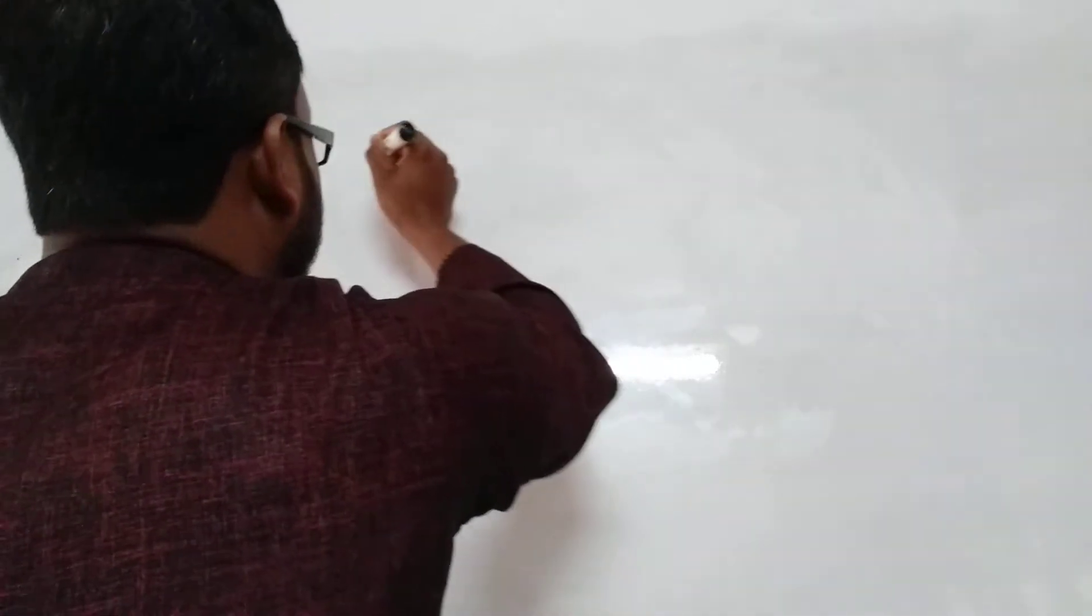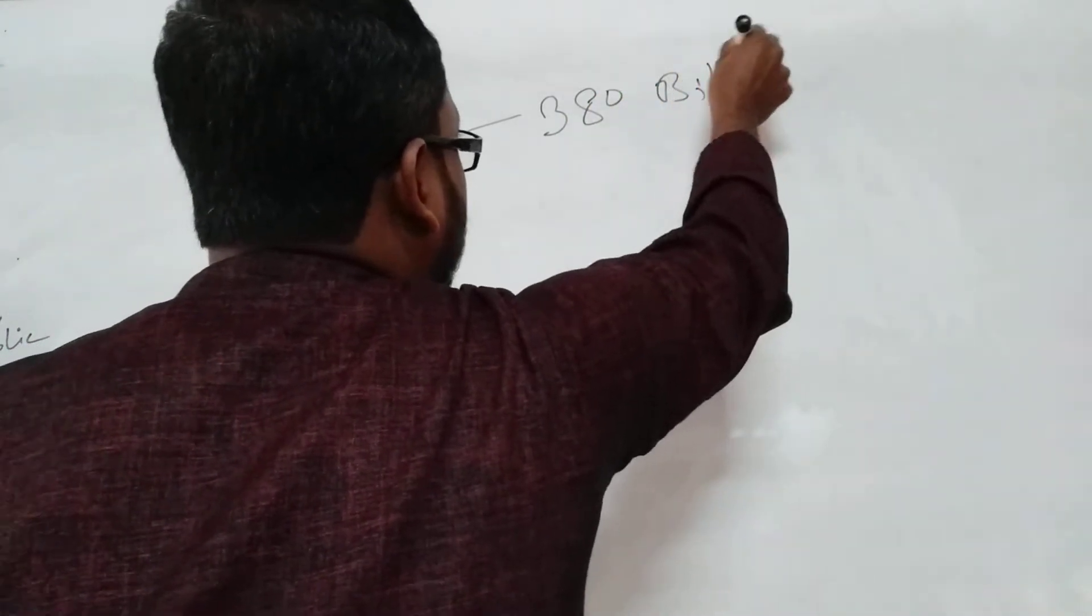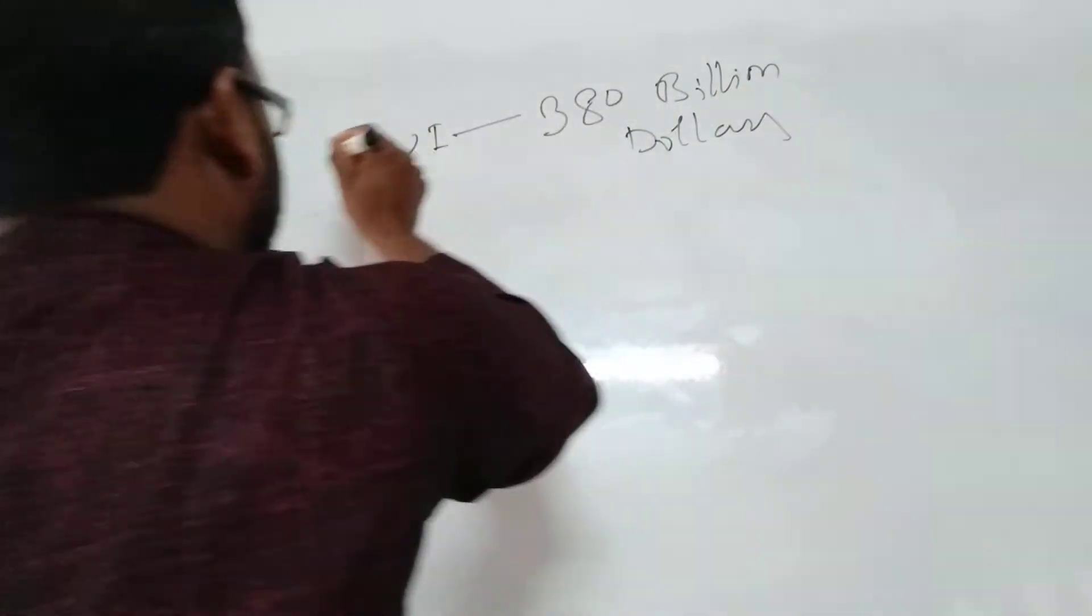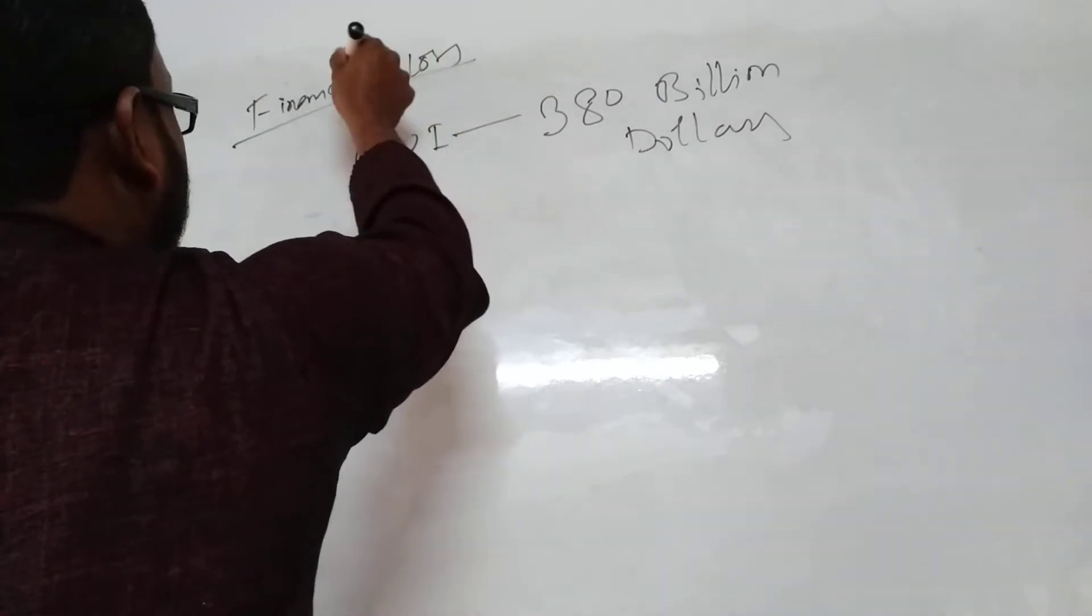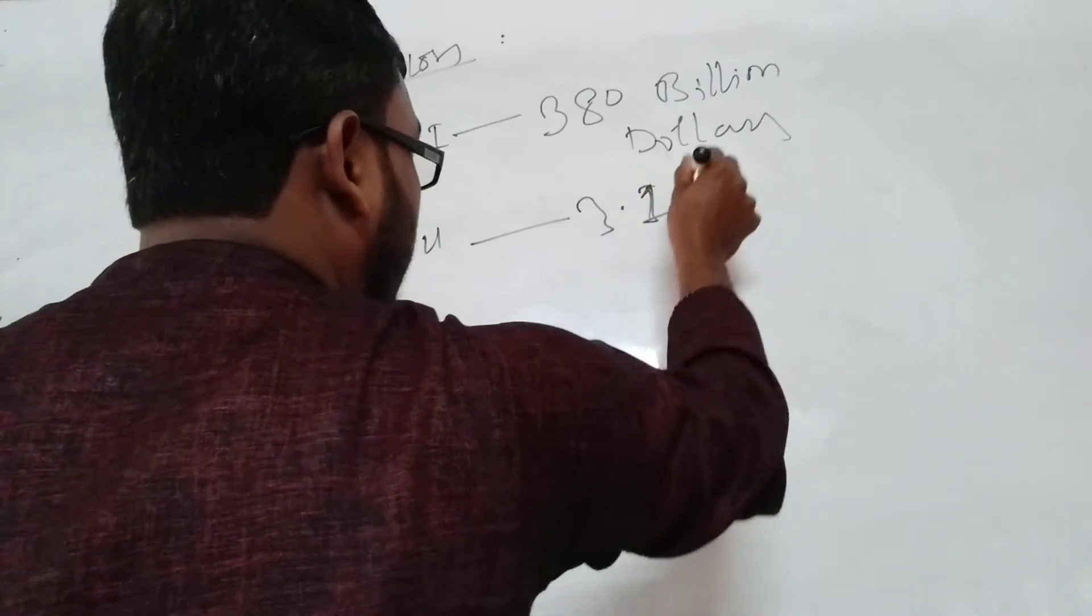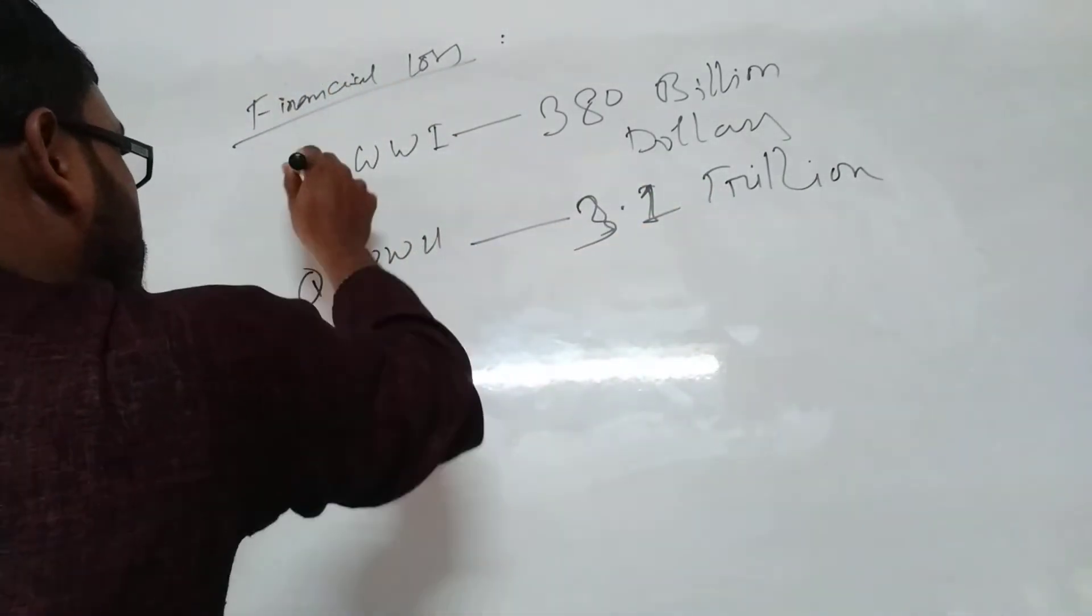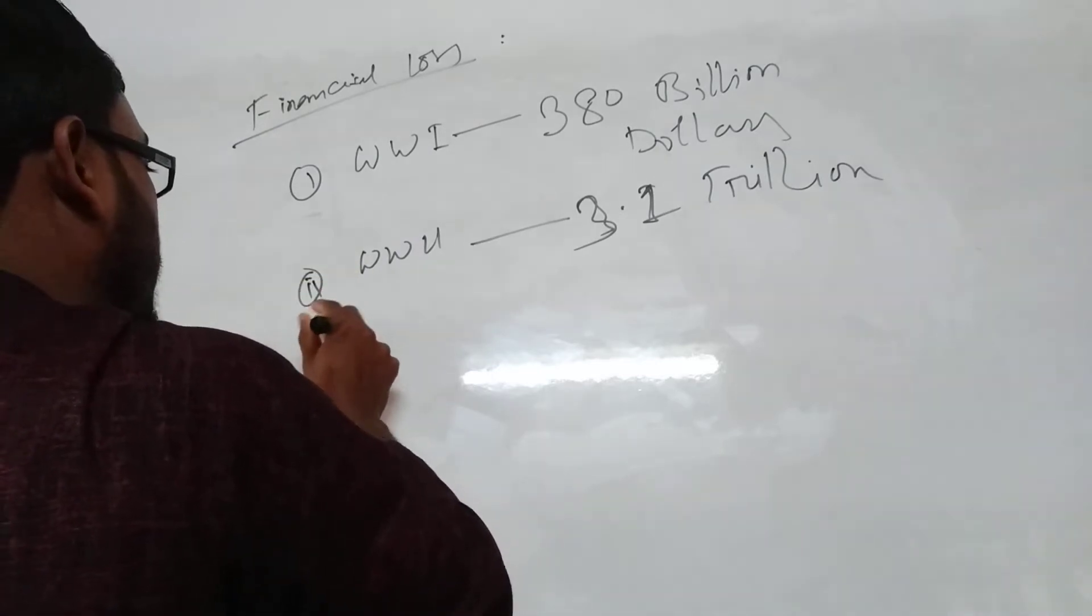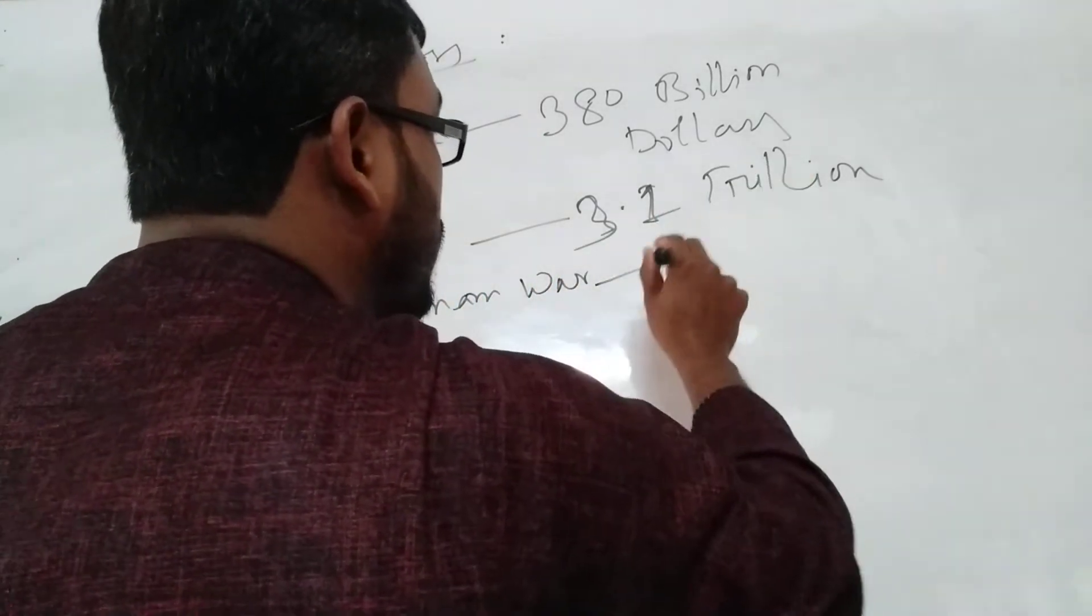The economic loss. The American Congress report stated that the First World War cost $380 billion dollars. First of all, financial loss - 3.8 trillion dollars.